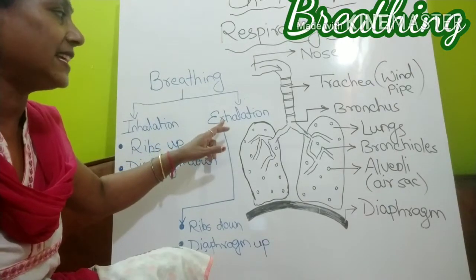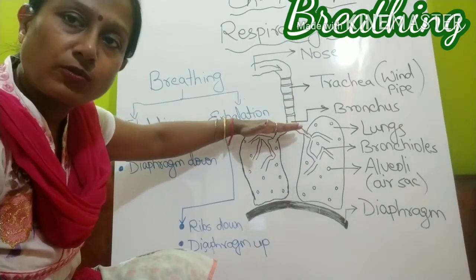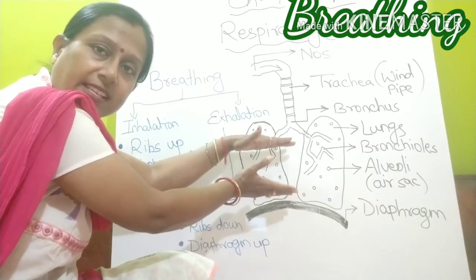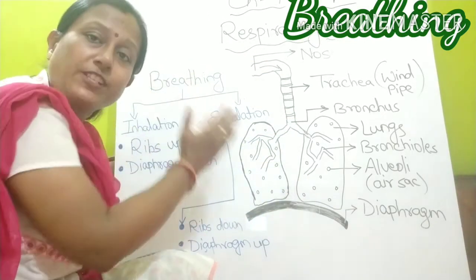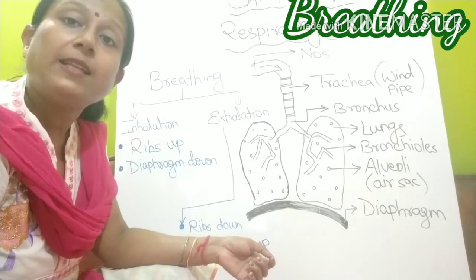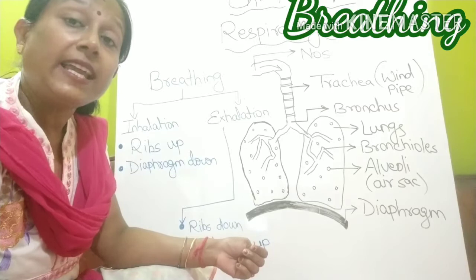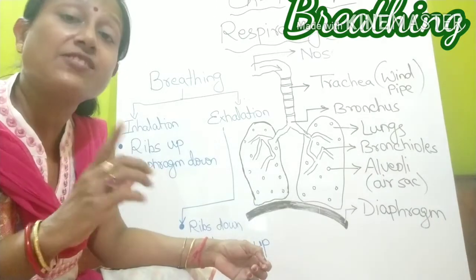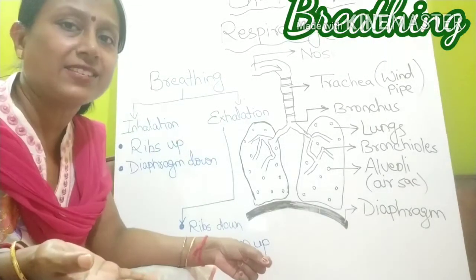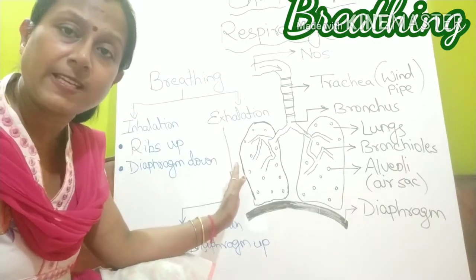During exhalation, the diaphragm moves up and the rib cage moves down. The space of the chest cavity decreases, which pushes the air to move out. In this way, the breathing process takes place. The air which we inhale is rich in oxygen, and the air which we exhale is rich in carbon dioxide. So the breathing mechanism is clear.